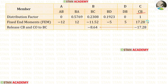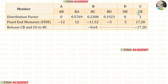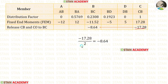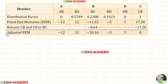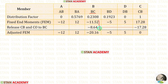For CB, the fixed end moment is 17.28. Since point C is a simply supported end, M_CB must be 0, so we add −17.28 to make it zero. We then give a carry-over from CB to BC of −17.28/2 = −8.64. For BC we add these two values, getting −20.16. For AB, BA, BD, and DB there are no changes.